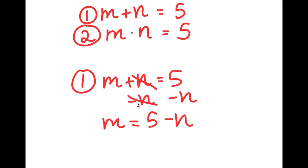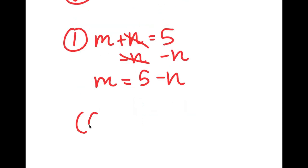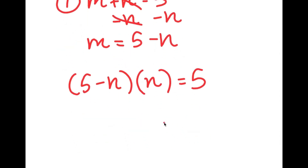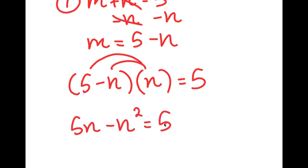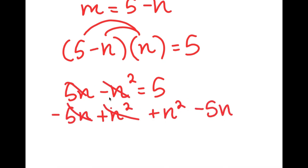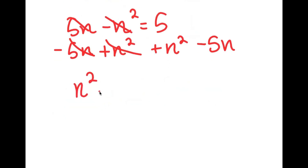The reason I did this is so I can substitute this value of m back into my original equation. So substituting back in, I get 5 minus n times n is equal to 5. Now I can distribute the n: 5 times n is 5n and negative n times n is negative n squared, so this is equal to 5. Now I can add n squared on both sides and subtract 5n on both sides, and I get n squared minus 5n plus 5 is equal to 0.